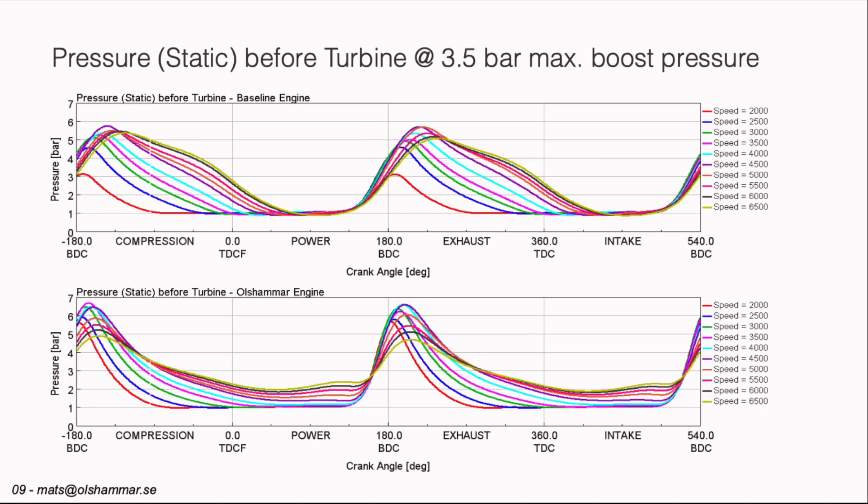But for the Oldsummer engine we can see the bottom graphs that many of them don't go down to one bar. So we have a constant pressure on the turbine all the time there. So it's a smoother flow through the turbine.